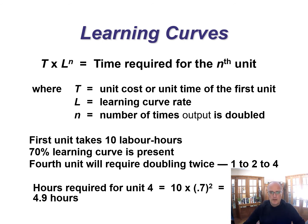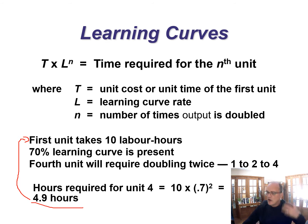For example, if the first unit takes 10 hours and 70% is our learning curve, the fourth unit will require doubling twice — 1, 2, 4. So we have 10 times 0.7 squared equals 4.9 hours. One point to make: if you're ever calculating a learning rate and the number you calculate is higher than the time that the first unit took, you've done something wrong. That's always a simple check to see if you're on the right track.